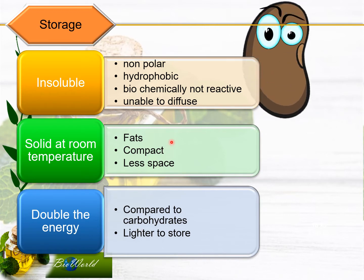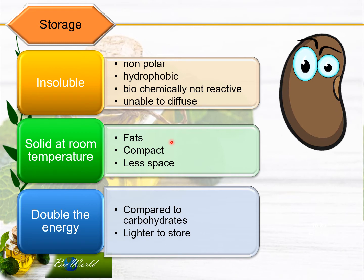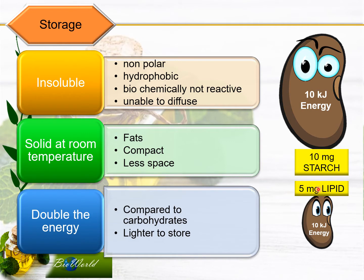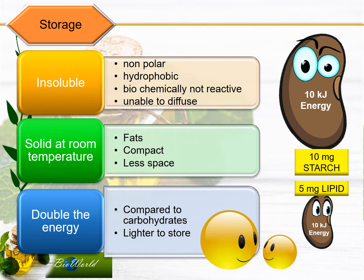Let me show you an example. Let's say this seed stores 10 milligrams of starch to generate 10 kilojoules of energy. Now if this seed chooses to store lipids instead, then it will only require 5 milligrams of lipid to store the same 10 kilojoules of energy. So the seeds will become smaller and lighter. My question to you is: what is the advantage of having smaller and lighter seeds? Write down in the comments below.